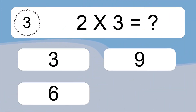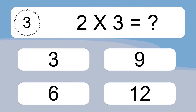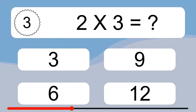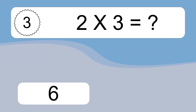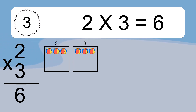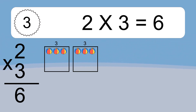2 times 3 equals what? 2 times 3 equals 6. We have 2 boxes, and each box has 3 colorful balls inside. If you count all the balls in all the boxes together, you will have 2 times 3 balls.